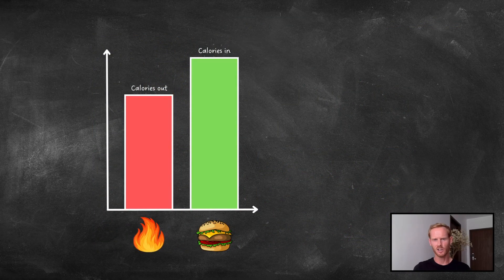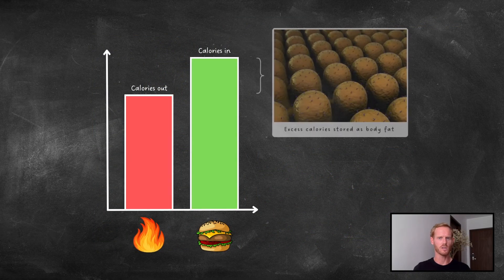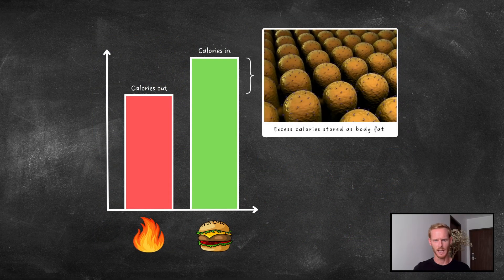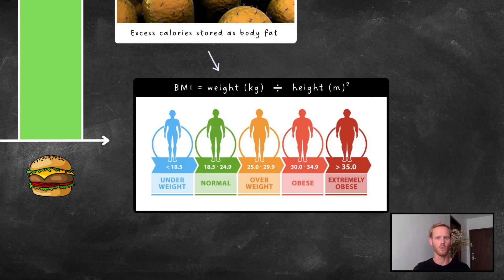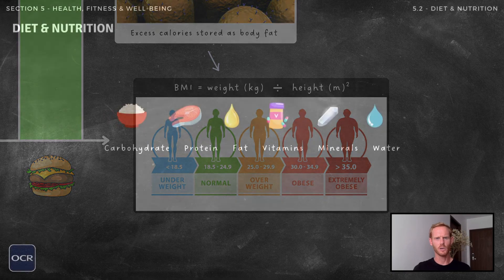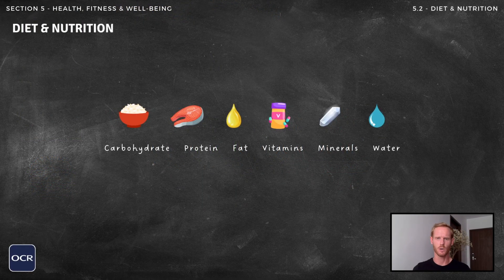Taking in more energy than you expend over time results in fat accumulation and eventually obesity. The primary measurement of obesity is body mass index or BMI, which is calculated by dividing an individual's weight in kilograms by their height in metres squared. Next you need to know about the different nutrients or components of a balanced diet, including their applications for sports performance.